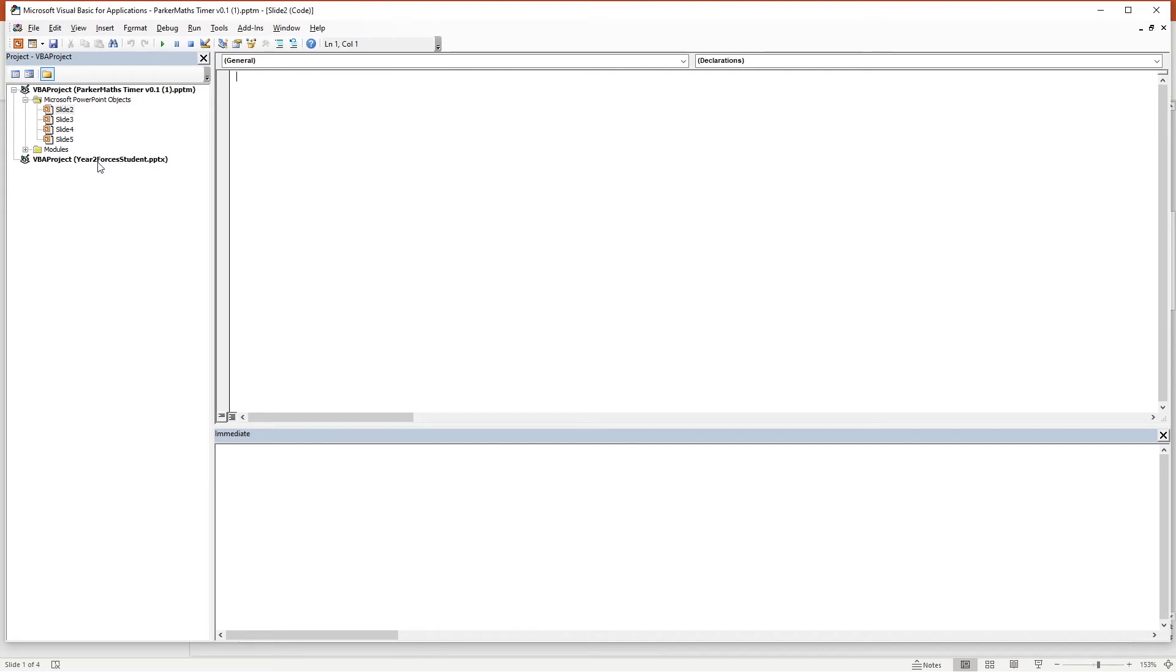In the new PowerPoint we need to right click here and go insert module. Then in the timer PowerPoint, expand this folder called modules and double click module 1.